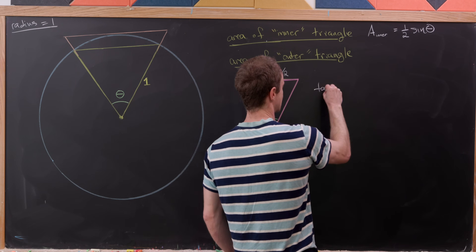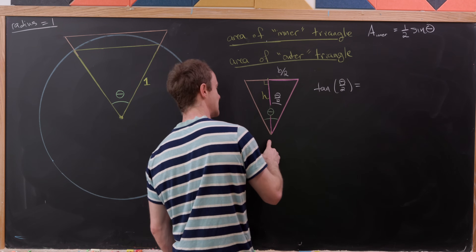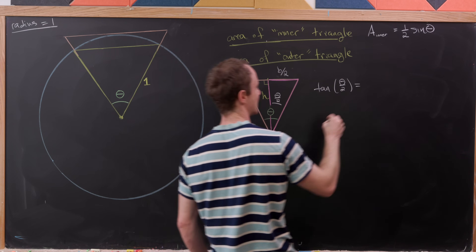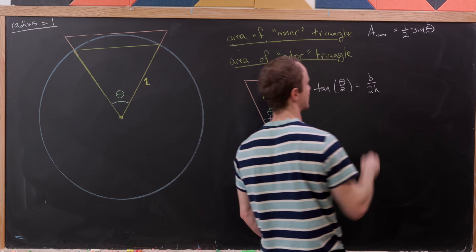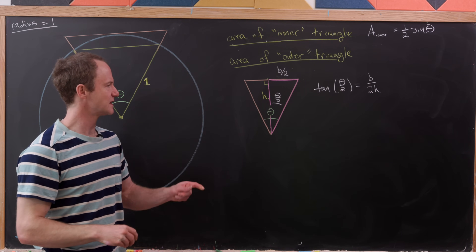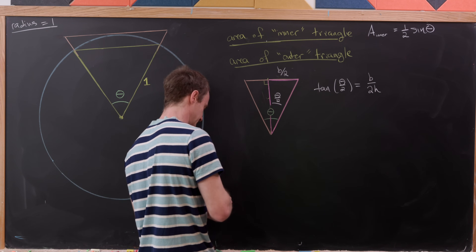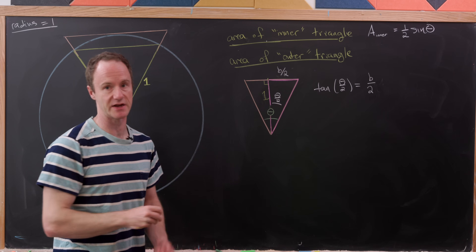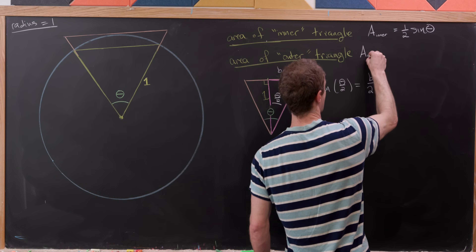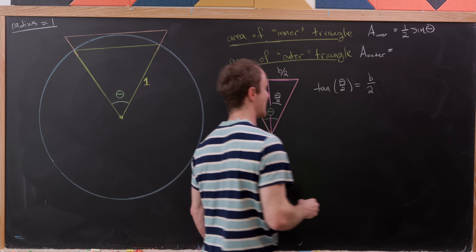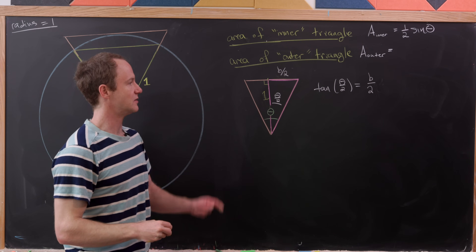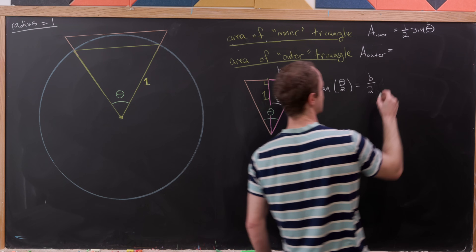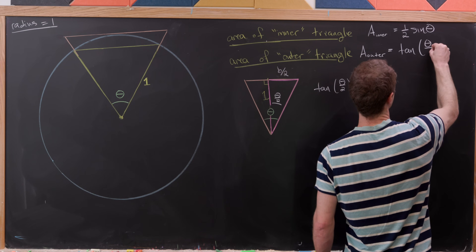The tangent of theta over 2 equals B over 2 times H. Since H equals 1, we have B over 2 equal to the tangent of theta over 2. The area of the outer triangle is one half times base times height, which is H times B over 2. Since H equals 1, the area is simply equal to the tangent of theta over 2.